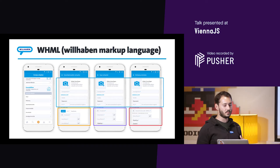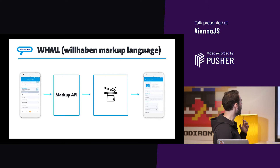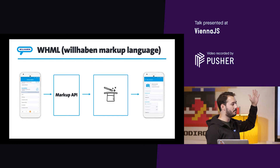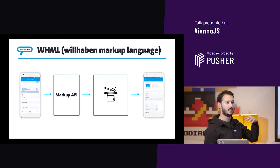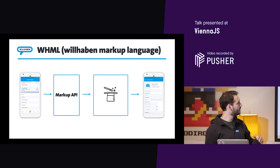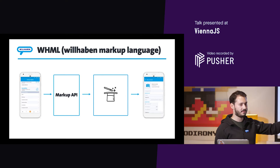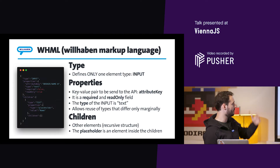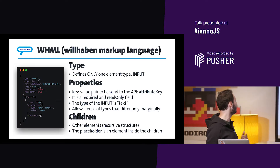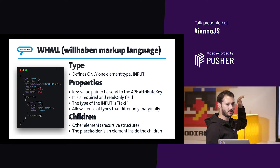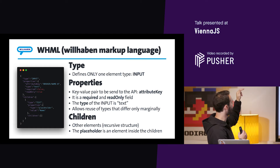We didn't want to hard-code any form or any logic in the client side, in the front-end. What we ideally want is to have a user choosing their category, passing to a markup API to say how we have to display the form, do some magic, and then you have the correct form in your phone. So what we created was the Wilhelm Markup Language.